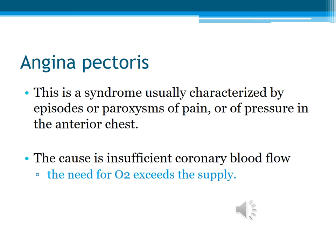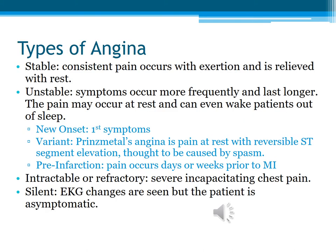Angina is characterized by episodes of pain or pressure in the anterior chest. People will talk about an elephant sitting on their chest. The cause is there's not enough oxygen to feed the coronary blood flow, so you have ischemia going on in the heart. Stable angina means consistent pain that occurs because of exertion — someone mowing the lawn or going to an exercise class — and when they stop their activity, the chest pain goes away. If it's unstable angina, the symptoms occur when people are at rest.